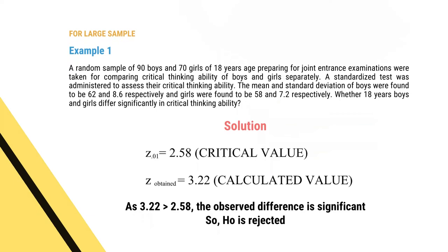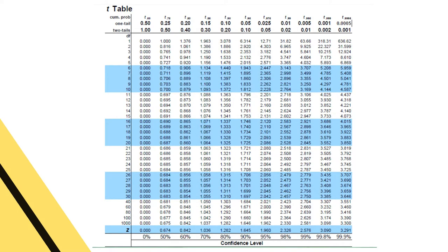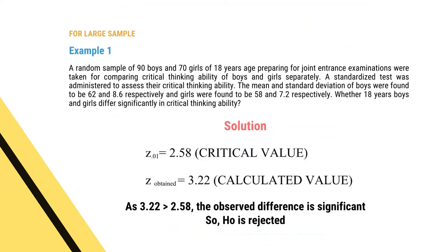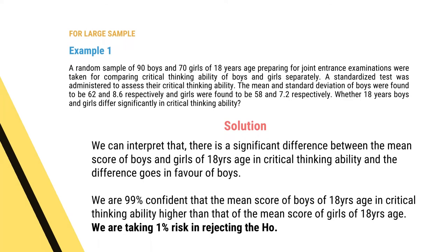At 0.01 level of significance, the Z critical value from the table is 2.58. Our calculated value is 3.22. Since 3.22 is greater than 2.58, the observed difference is significant and the null hypothesis is rejected. There is a significant difference in critical thinking ability between boys and girls of 18 years, with the difference in favor of boys. We are 99% confident the mean score of boys is higher, taking only 1% risk in rejecting the null hypothesis.